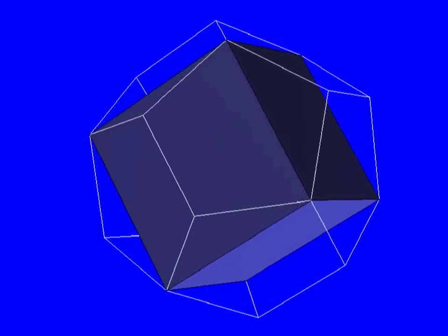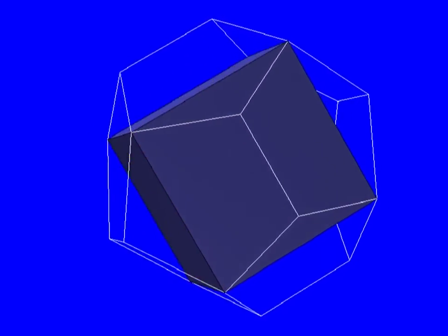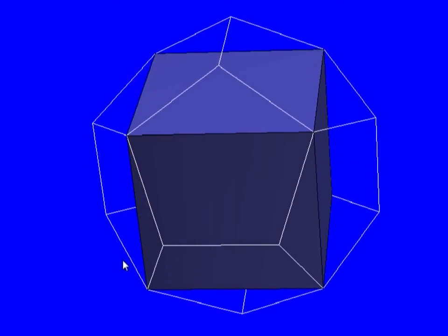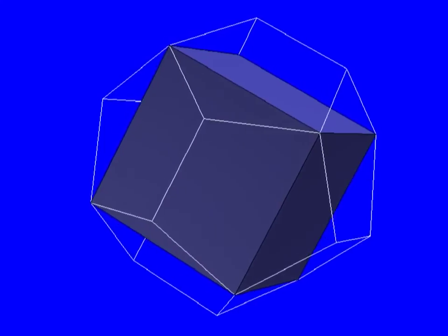To understand how the dodecahedron face planes give us more orthogonalities, let's go back to this cube in the dodecahedron. On the left and the right here are two cube faces which we know are perpendicular to this cube edge. Now this dodecahedron face contains this cube edge, so this face plane is also perpendicular to the cube face on the left and on the right. By symmetry, when we include all five cubes in the dodecahedron, each dodecahedron plane will be perpendicular to ten of the cube planes.